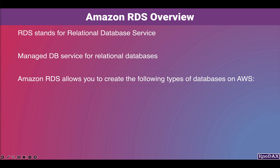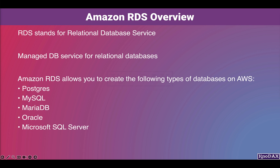Amazon RDS allows you to create Postgres, MySQL, MariaDB, Oracle, Microsoft SQL Server, and Amazon Aurora databases. Amazon Aurora is the AWS proprietary database.